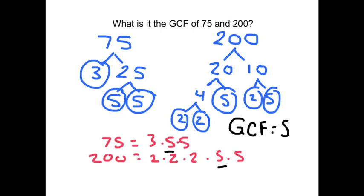And then they also both have another 5. So, I put 5 again. And they have nothing else that's the same. So, the final answer for GCF of these two numbers is equal to 25.